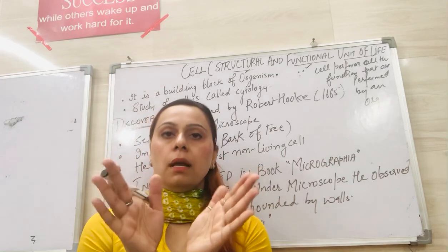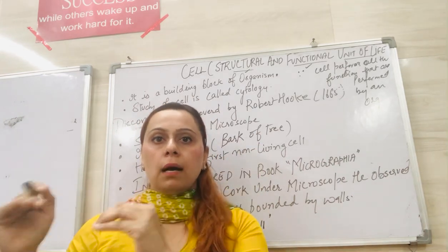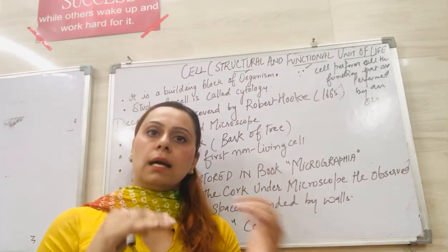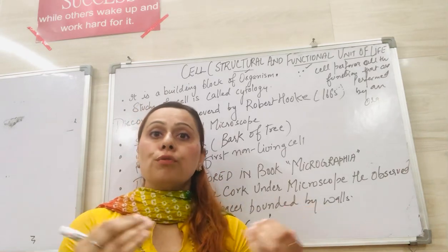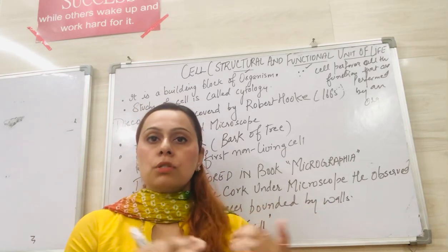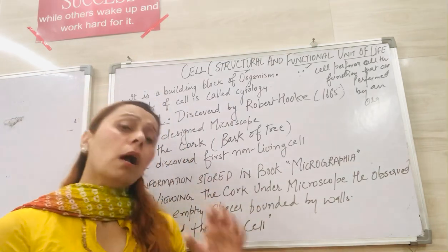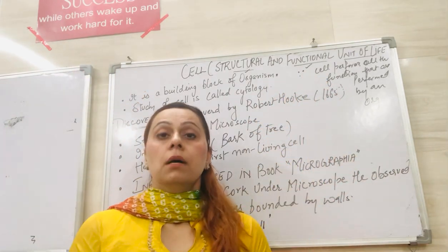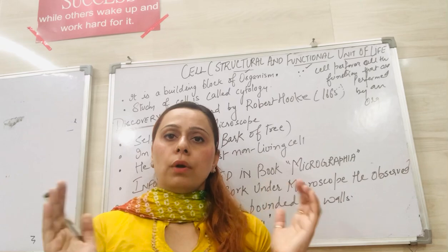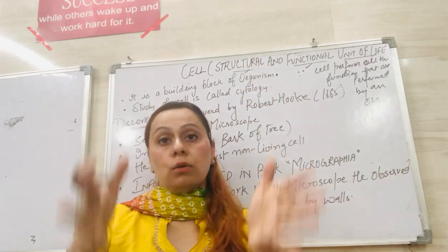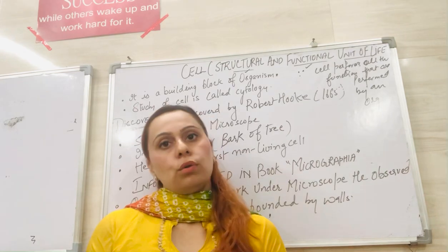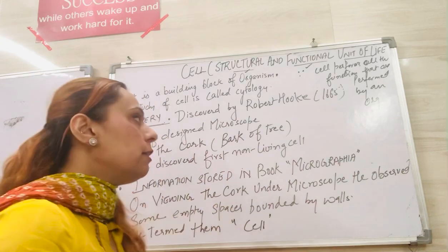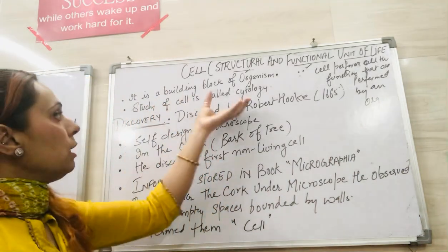Just like a brick builds a wall and then makes a whole house, a cell makes a tissue, and that tissue combines to form an organ, and many organs together combine to form an organ system. We can simply relate this example with a cell.